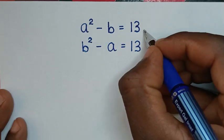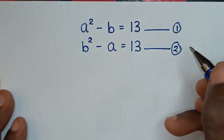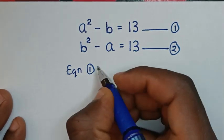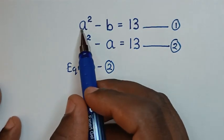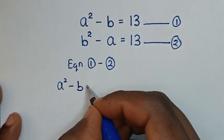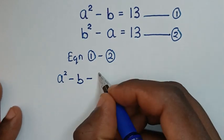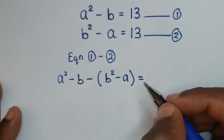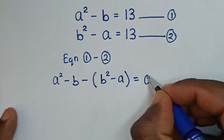Let's start by letting this as equation 1 and this as equation 2. In the first step we'll take equation 1 minus equation 2. From the left side we'll take a squared minus b, then minus equation 2 in the left side which is b squared minus a, and on the right side it will be 13 minus 13 which is 0.